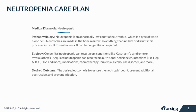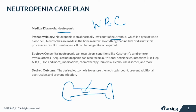Neutropenia is an abnormally low count of neutrophils, which is a type of white blood cell. Neutrophils are made in the bone marrow, so anything that inhibits or disrupts this process can result in neutropenia. Neutropenia can also occur if neutrophils are destroyed, for instance by a medication. It can be congenital or it can be acquired.